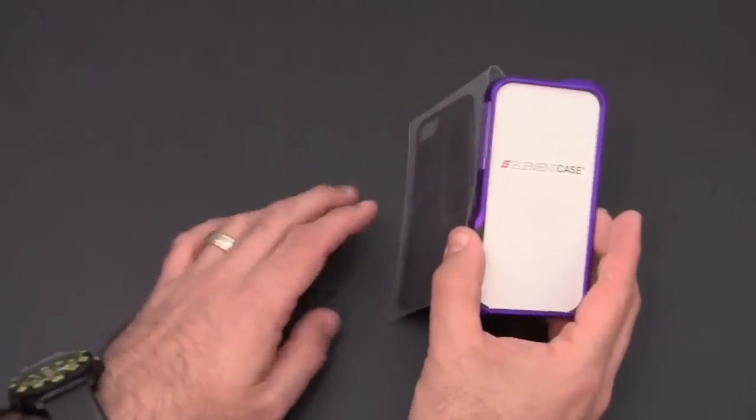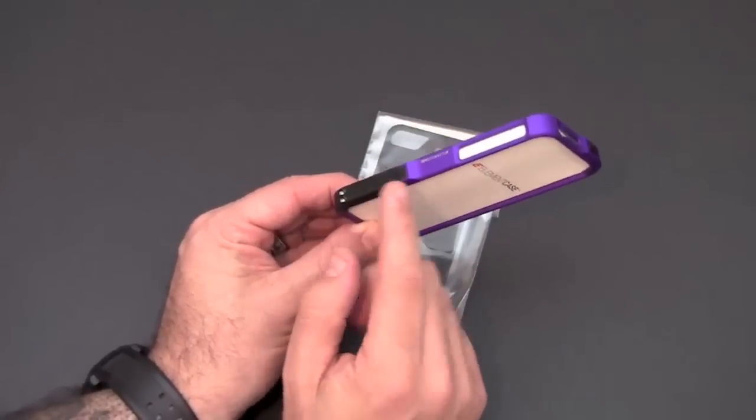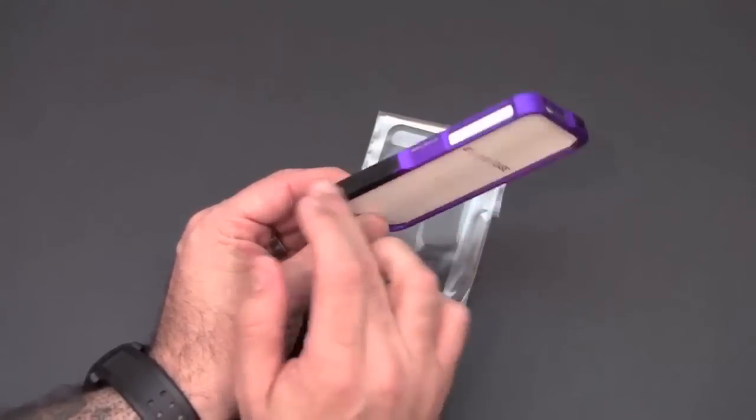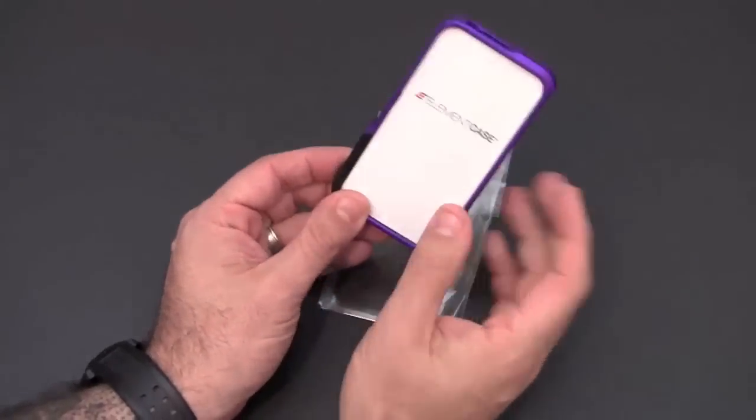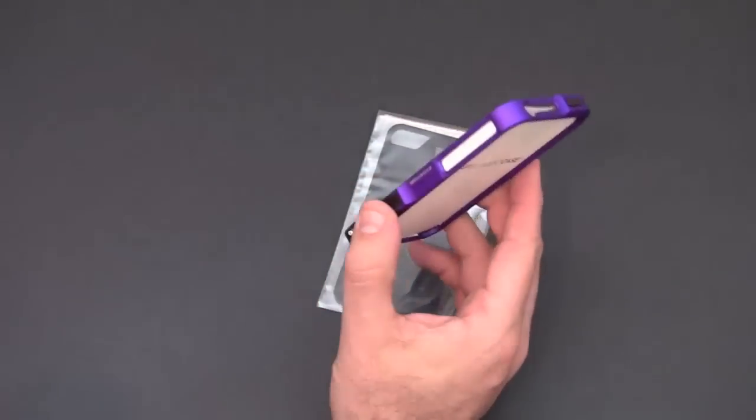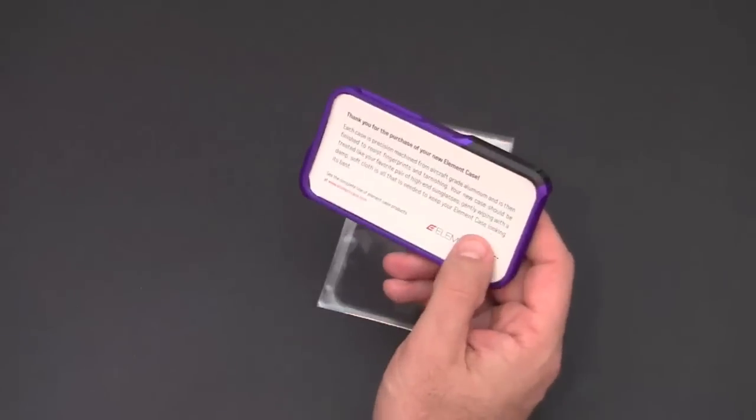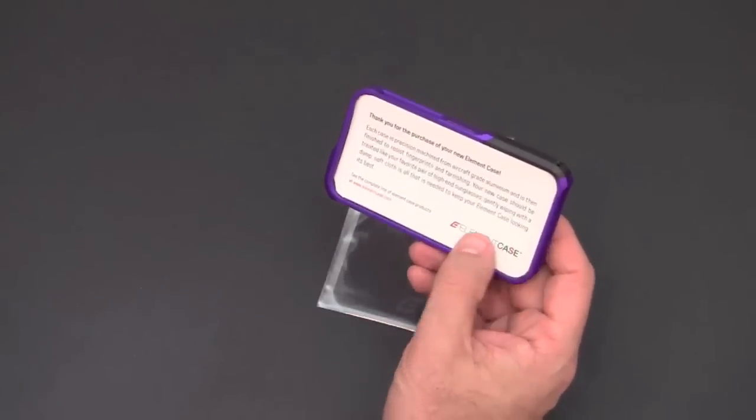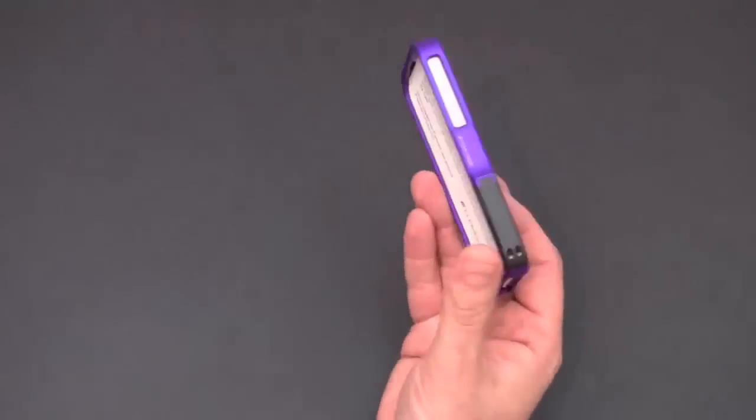So as you can see this is the Royal Purple. It has a black accent. This is a special composite material that helps greatly reduce death grip and any sort of reception issues. The element case is kind of the original aluminum bumper and this one does the best job of all the ones I've tried as far as eliminating any sort of reception issues.